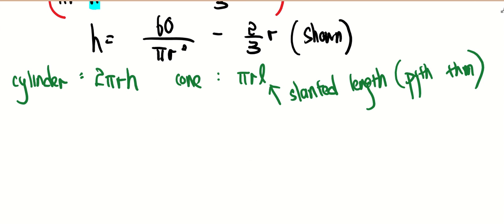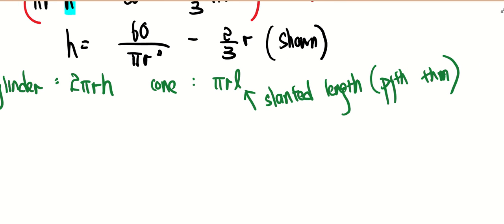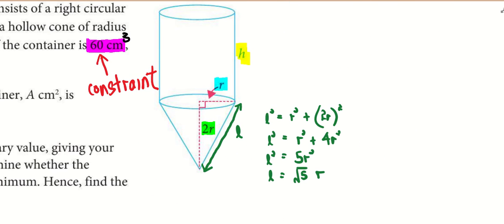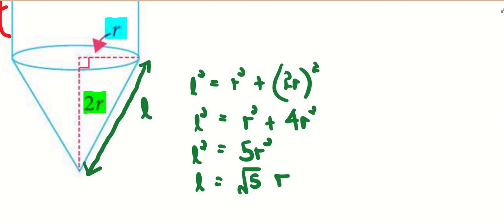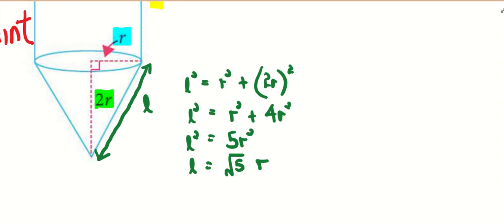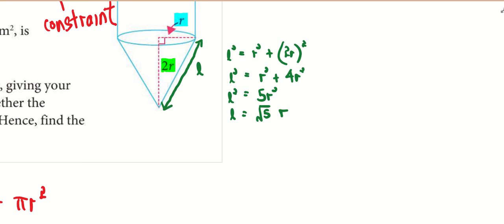Okay, so in part two we need to find the total surface area of the open container. There's a cylinder—you need 2πrh. There is the cone where the formula for the surface area is πrl, where l is the slanted leg. You all told me we make use of Pythagoras theorem. So I zoom in on this part—I want to find the slanted leg. The slanted length will turn out to be √5r, so now I just need to plug everything inside the formula.